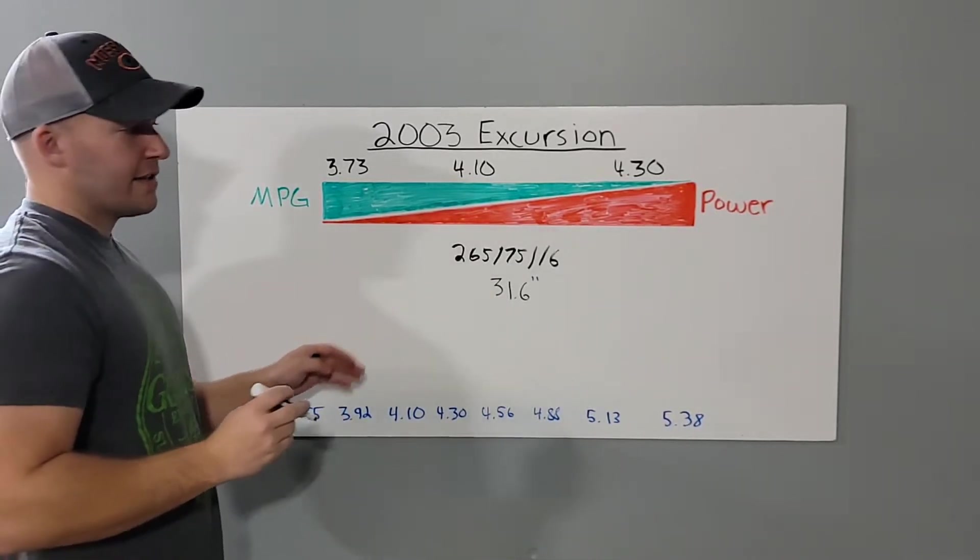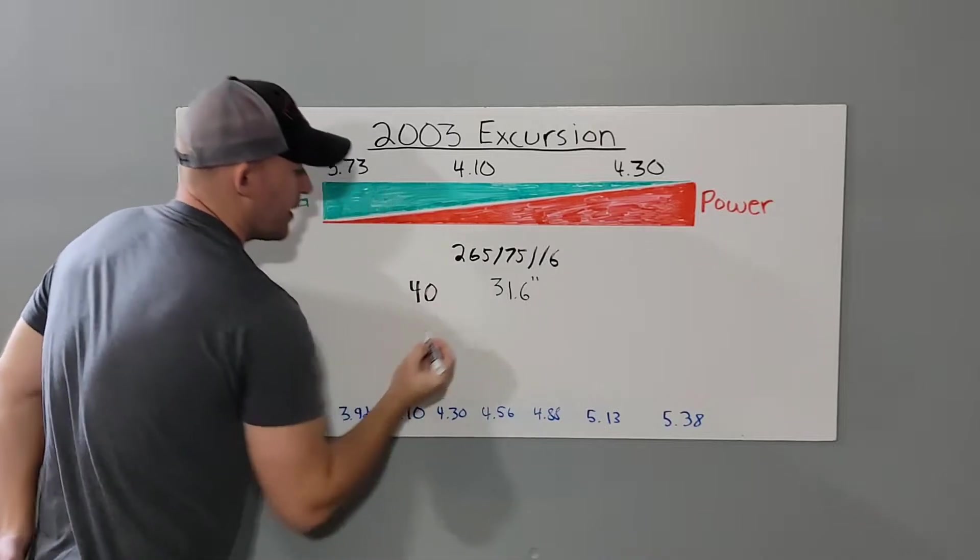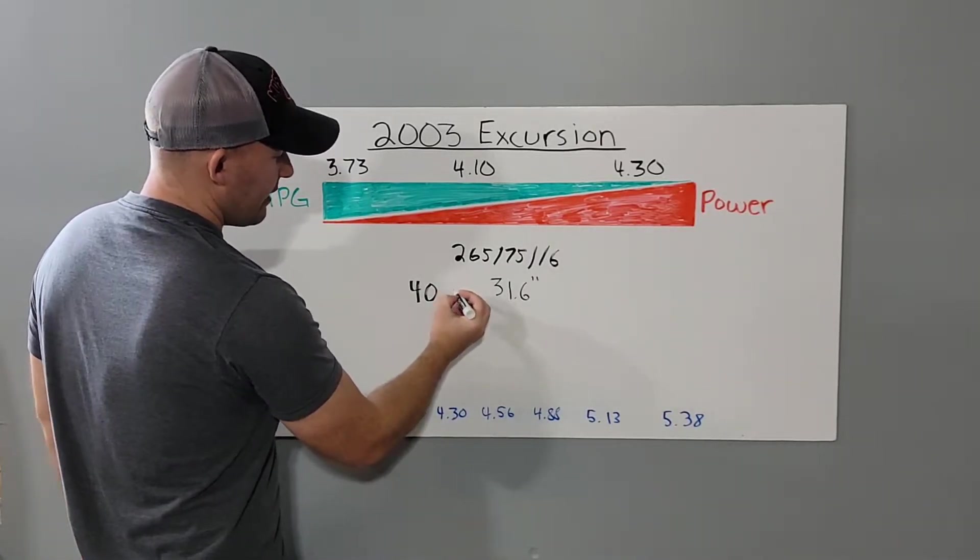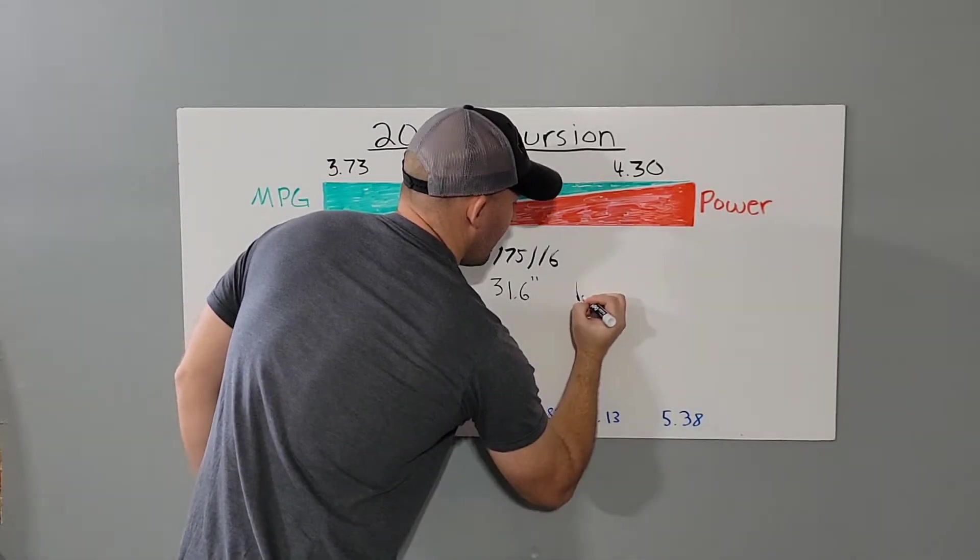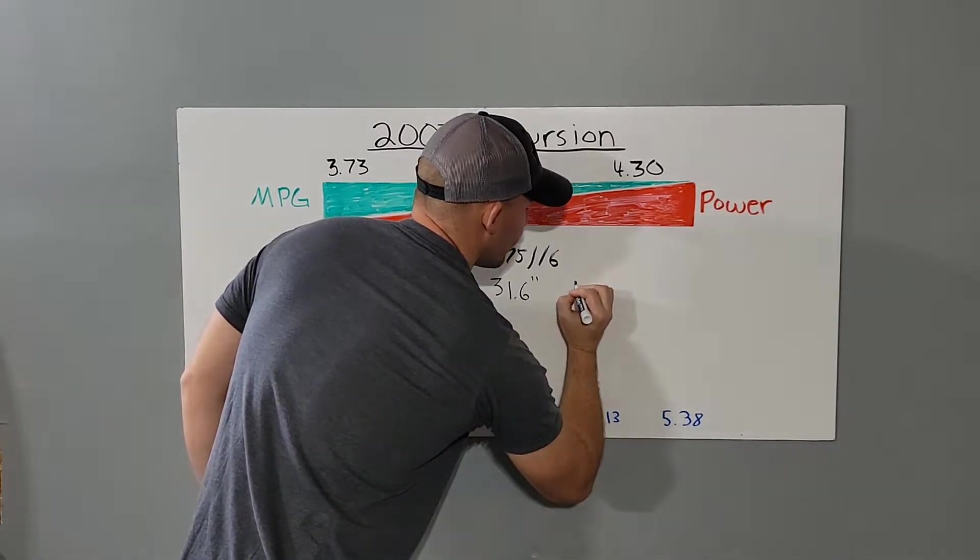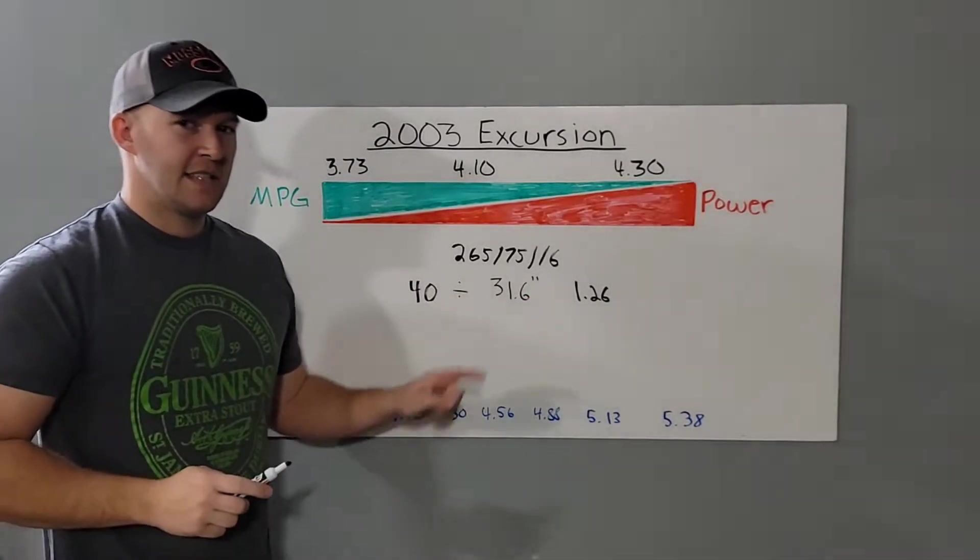All you have to do is take your new tire size—I'm running 40s—so 40, and then you divide that by 31.6 and you end up with 1.26 as your correction factor. And so that 1.26 is key right there. That is all you need in order to find out what you need for your axle ratio.